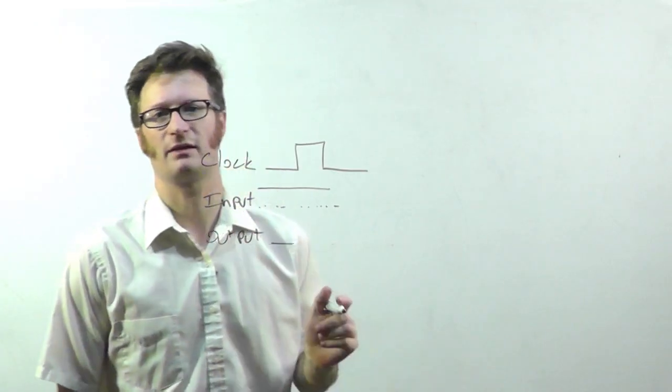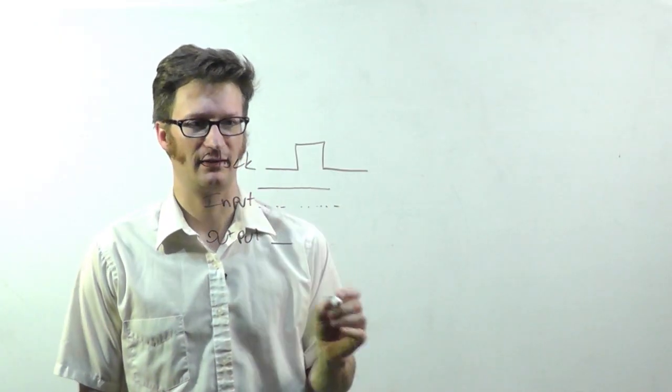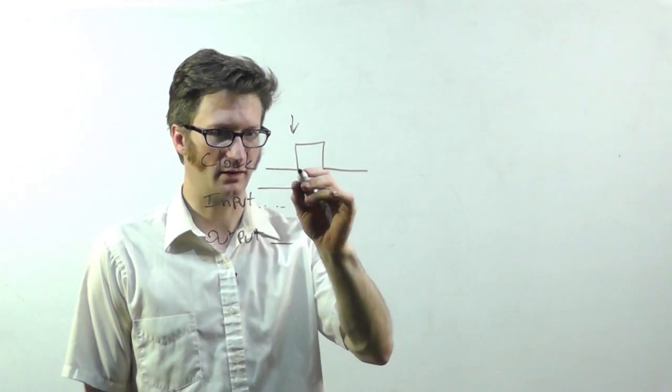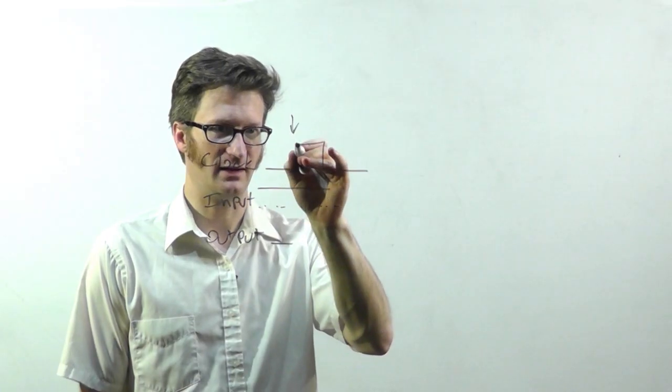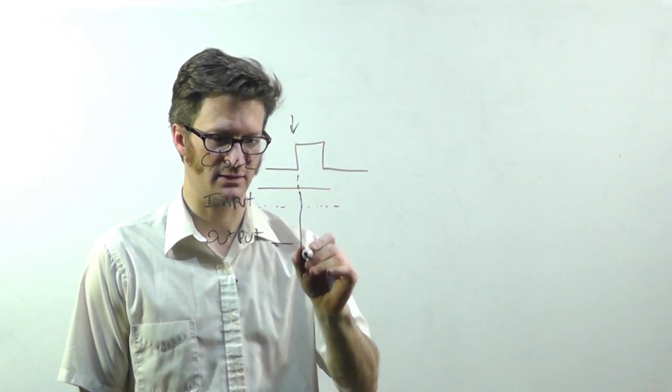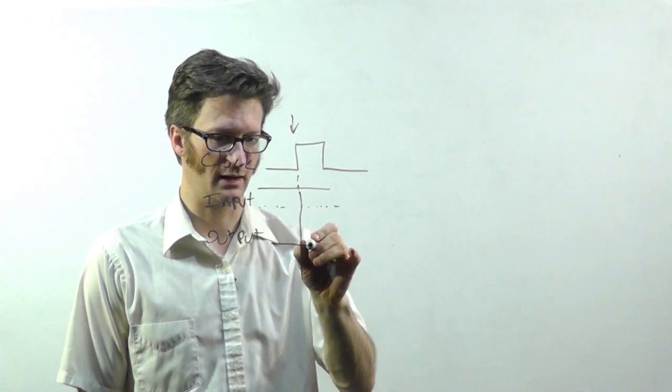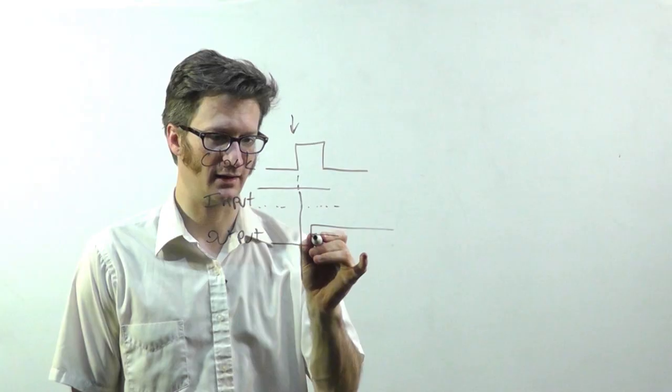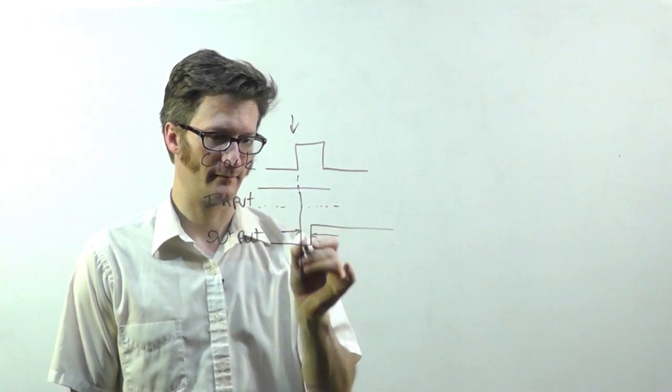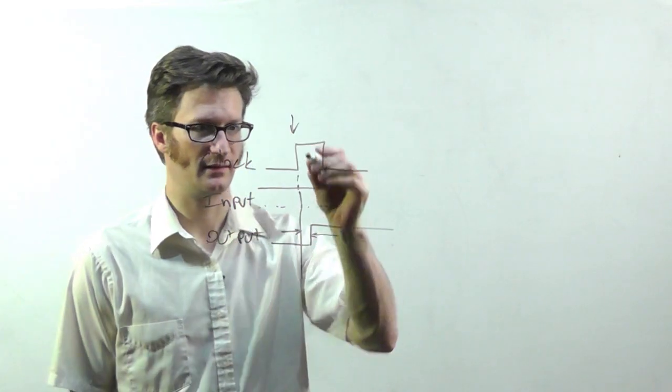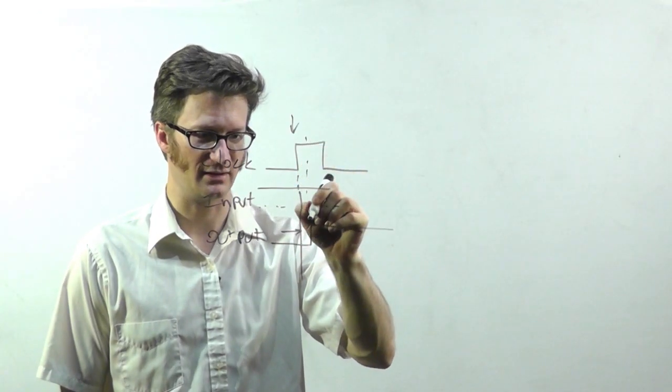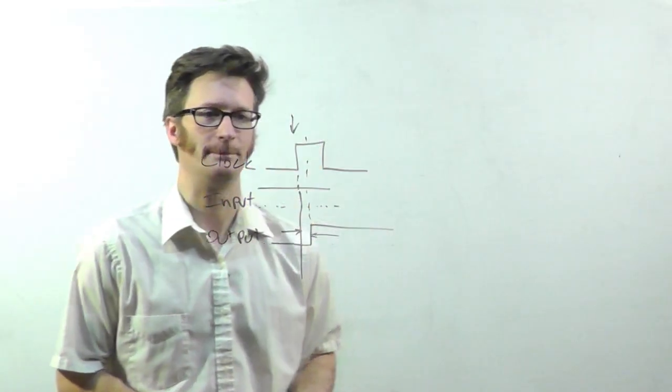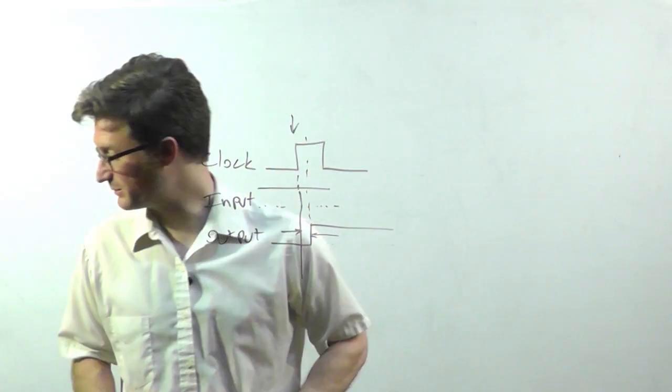So propagation delay for a flip-flop means that if this is a rising edge flip-flop, how long does it take between that rising edge—just draw a line like that—and when the output actually reflects the input. So this time right here is the propagation delay. That might be measured in nanoseconds or microseconds if it's really slow.